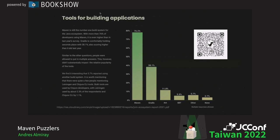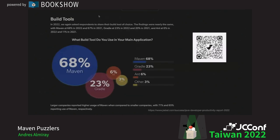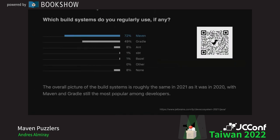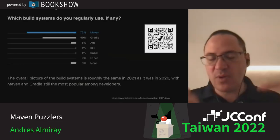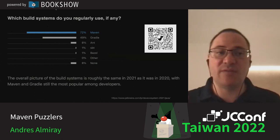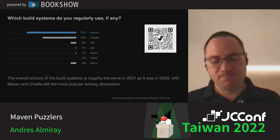Of course there are others, but Maven remains the most used tool — whether you like XML or not, that's still a fact. The JRebel survey shows 68% using Maven, and JetBrains' yearly survey shows 72%. So we have between 65% and almost 80% depending on who you ask — Maven is quite popular, no questions asked.